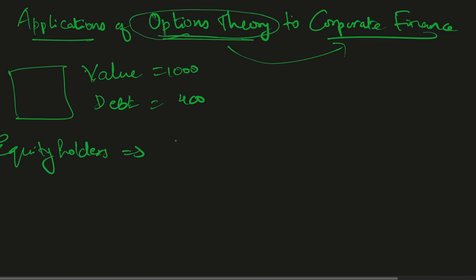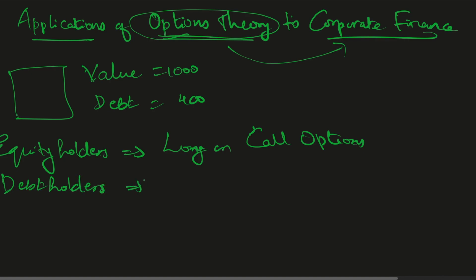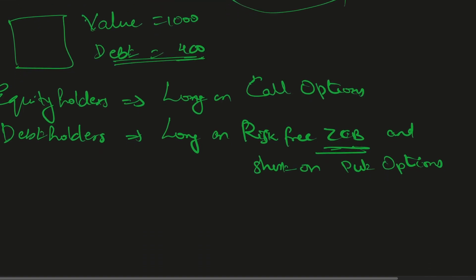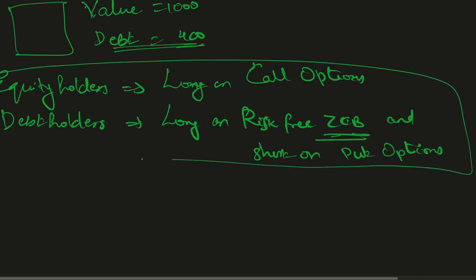The takeaway point is: from the equity holders' perspective, the payoff will be as if they are long on call options. For the debt holders, it will be as if they are long on a risk-free zero coupon bond — comparing that zero coupon bond with the debt — and they are short on put options. This is the position they are going to take.